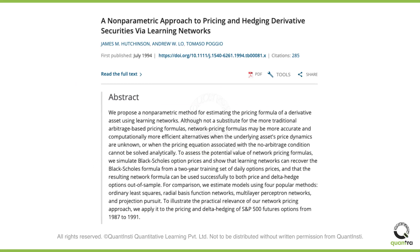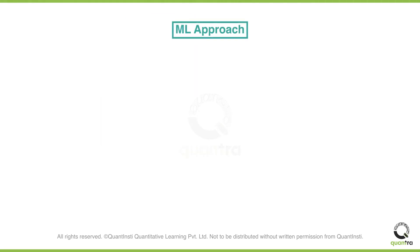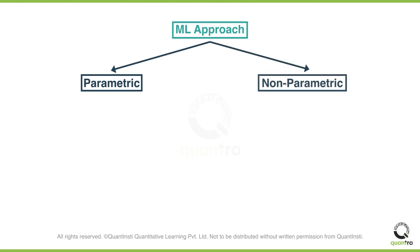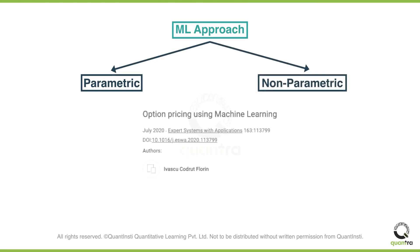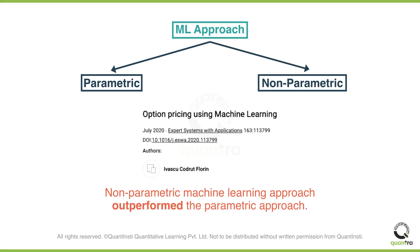For solving this problem, James Hutchinson along with a few other researchers tried to explore a non-parametric approach for predicting options prices using machine learning. From this point onwards, the machine learning approach was widely used for pricing options. Most research papers on this subject have concluded that the non-parametric ML approach outperforms the parametric approach when it comes to pricing options.